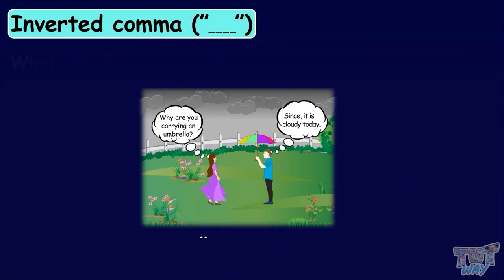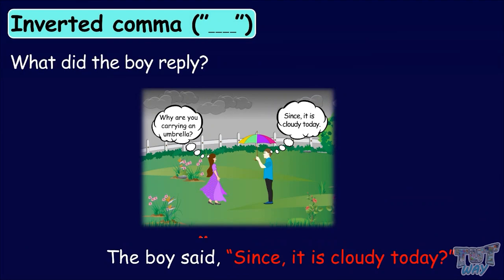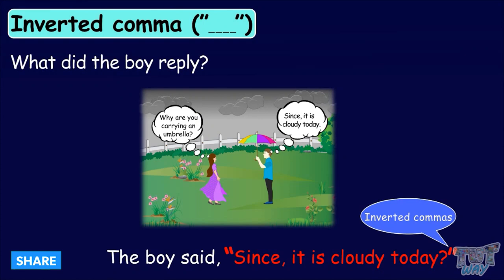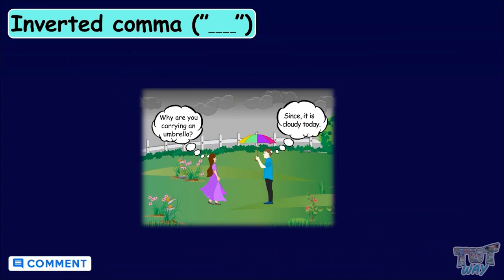What did the boy reply? The boy said, Since it is cloudy today. Again, the words written in red are the exact words of the boy, so we have written them in inverted commas. So kids, we use inverted commas whenever we have to write the exact words of the speaker.